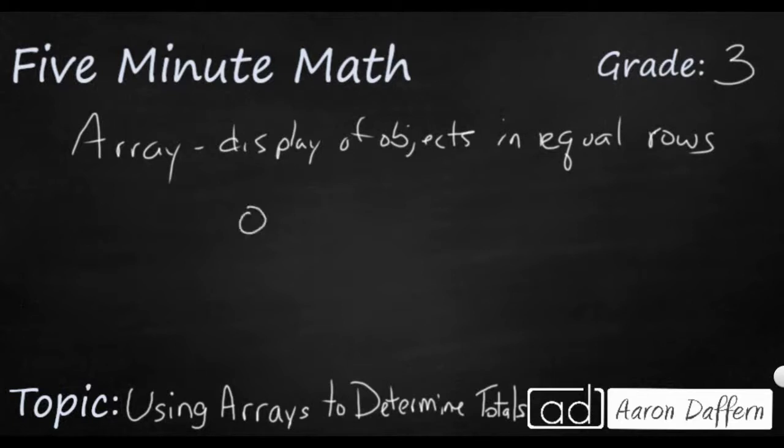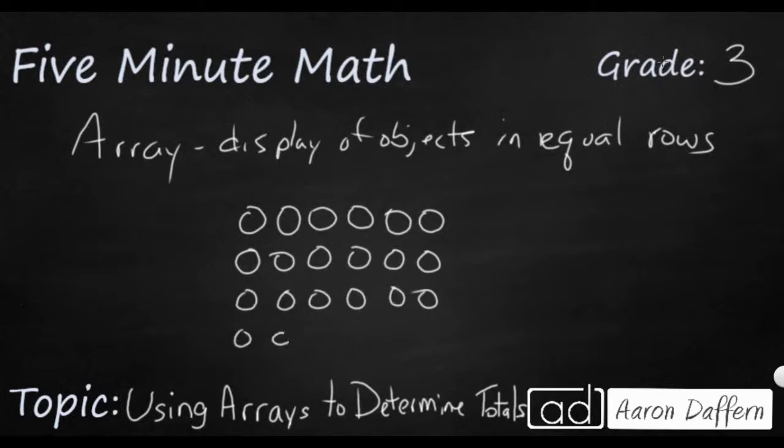So let's say I've got some circles, and right now I don't necessarily have an array. I've just got a whole bunch of circles lined up. But now I have an array because I've got two rows of equal numbers of circles. Now I'm going to add another one, and I'm going to add another one.